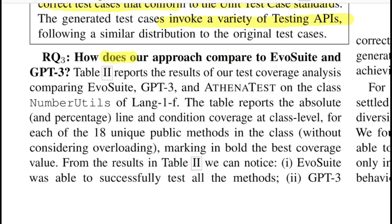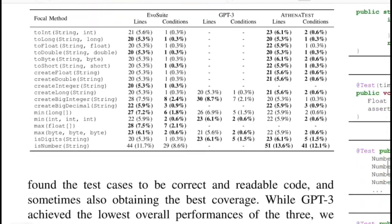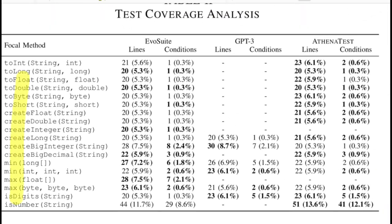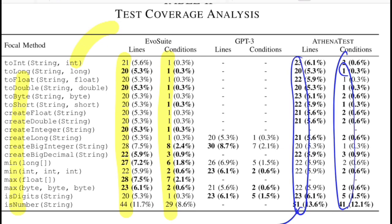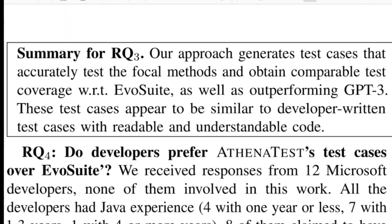For RQ3 — how does AthenaTest compare to EvoSuite and GPT-3? — they compared test coverage results. AthenaTest generates relatively more lines of test code and tests more conditions than EvoSuite: for conditions covered, EvoSuite scored 29 versus AthenaTest's 41. The summary: AthenaTest generates test cases that accurately test focal methods, obtaining comparable results with EvoSuite and outperforming GPT-3, likely because GPT-3 was only used in zero-shot mode without task-specific fine-tuning.